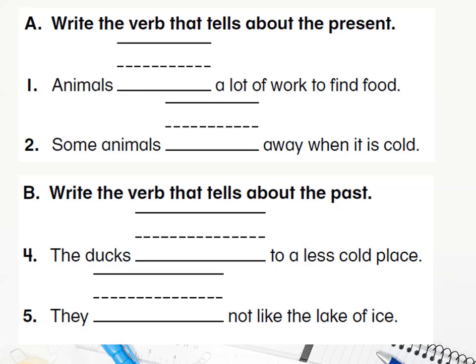Let's practice together so you will understand more. The question says: write the verb that tells about the present. Number one: 'Animals blank a lot of work to find food.' We need present tense, so we think about 'do' or 'go' only. Do we say 'do a lot of work' or 'go a lot of work'? Amazing — 'do'! So: 'Animals do a lot of work to find food.'